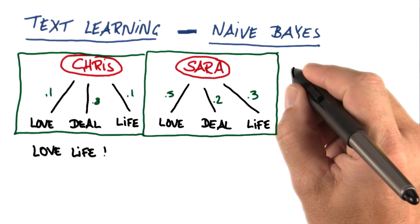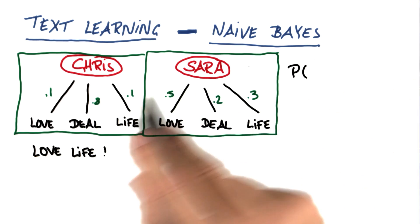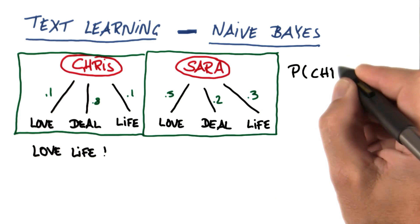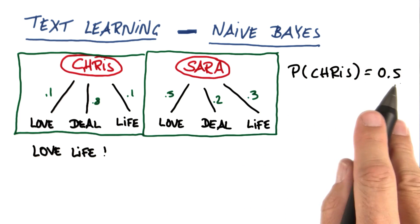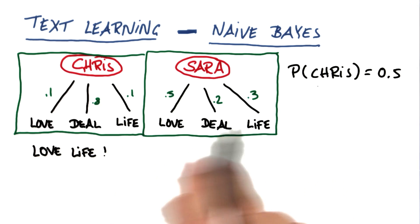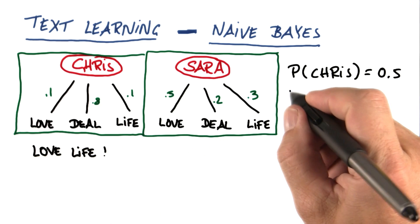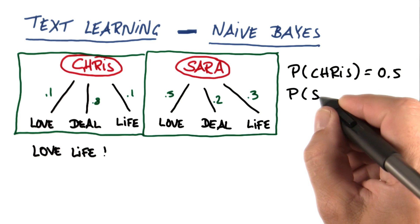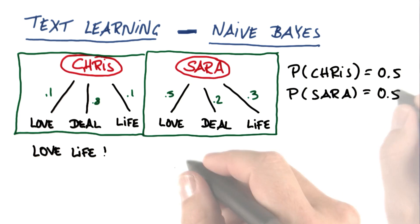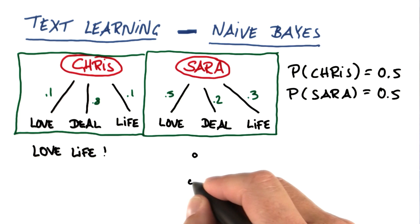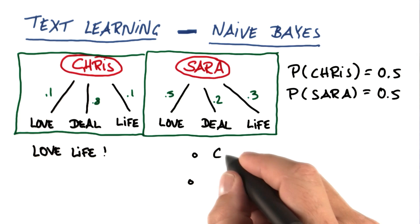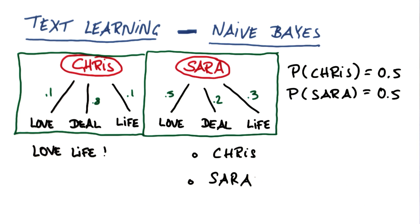Suppose you believe a priori that there's a 50% probability it's from Chris or from Sarah. So P(Chris) = 0.5 means the prior probability for it being Chris is 50%. And that immediately means, because it's from one of the two, that the probability of Sarah is also 0.5. So if you look at this intuitively, who's more likely to have written this email — Chris or Sarah?